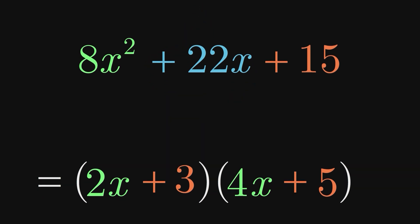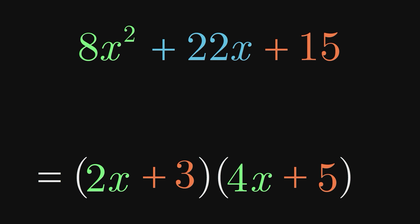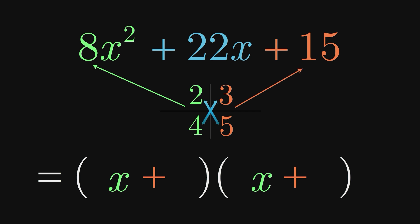So in summary, if we want to factor 8x squared plus 22x plus 15, the coefficients of x in the two factors here must multiply to 8. The constant terms in the two factors must multiply to 15. And what we'll informally call the cross products of these values must add to 22.